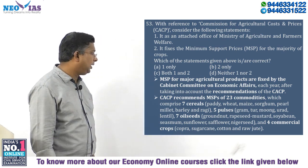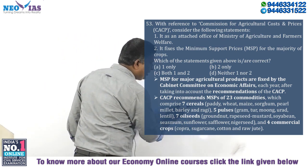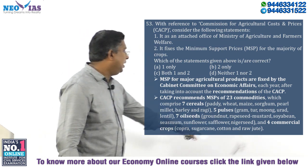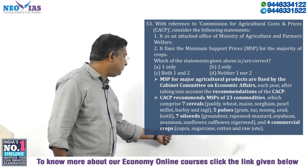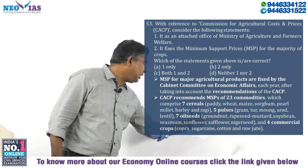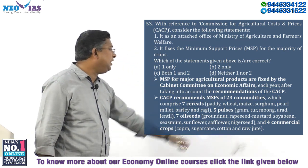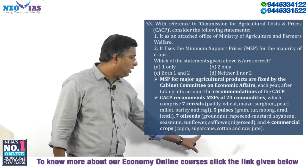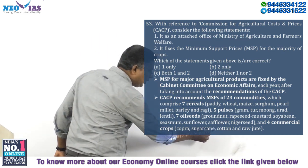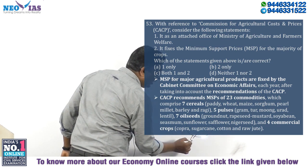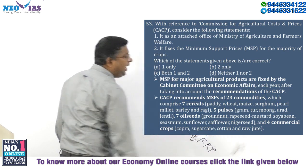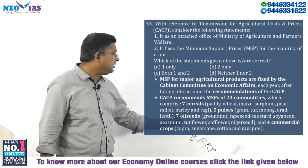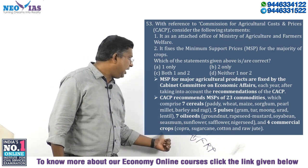There are seven oilseeds: groundnut, rapeseed, mustard, soybean, sesamum, sunflower, safflower, and niger seeds. Finally, four commercial crops: copra, sugarcane, cotton, and raw jute. Please note that for sugarcane, the price is called Fair and Remunerative Price, not MSP. So in total: seven cereals, five pulses, seven oilseeds, and four commercial crops — 23 commodities.